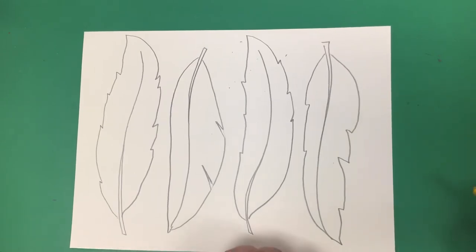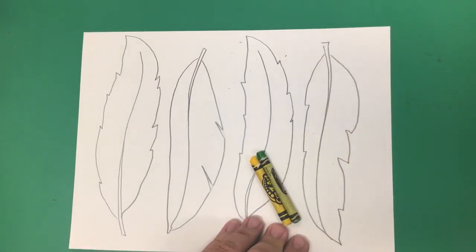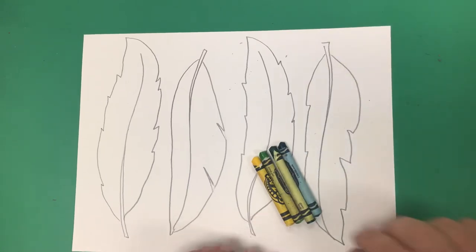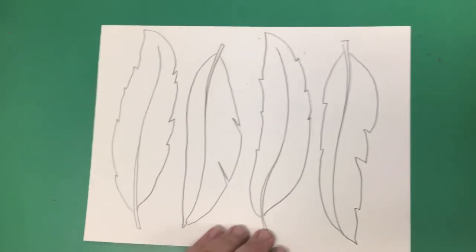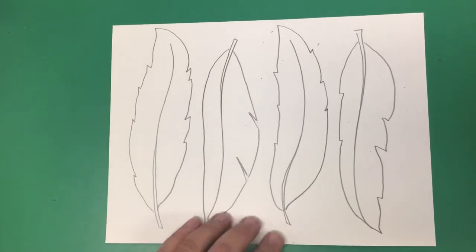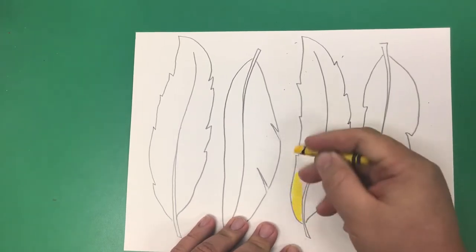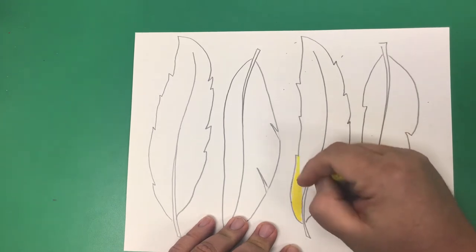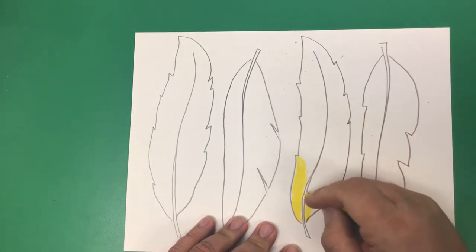So here are my analogous colors. Yellow, yellow green, green, and blue green. It's my favorite combination of analogous colors. But you pick which ones you like best. So I'm going to start off with yellow at the bottom. And if you notice, I'm coloring with the shape of the feather. And I'm pushing relatively hard here at the bottom.